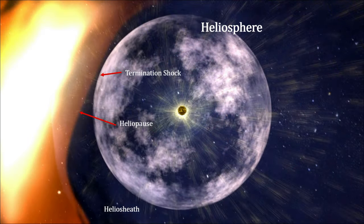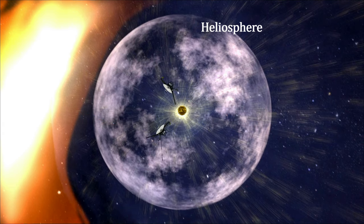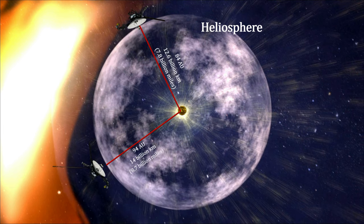The point where the solar wind begins to interact with the local interstellar medium and slows down is called the termination shock. The point where the solar wind becomes slower than the speed of sound is the termination shock. It was traversed by Voyager 1 in 2004 and Voyager 2 in 2007.